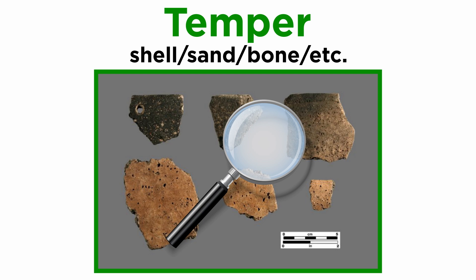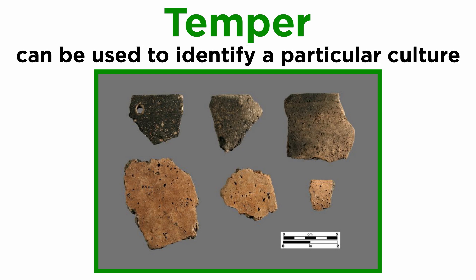Identifying a ceramic's temper can be difficult and sometimes requires a microscope to inspect the ceramic. Often, a culture will have a signature paste with consistent levels of temper across all their ceramics that can be used to identify them.